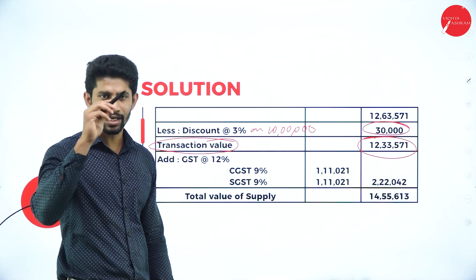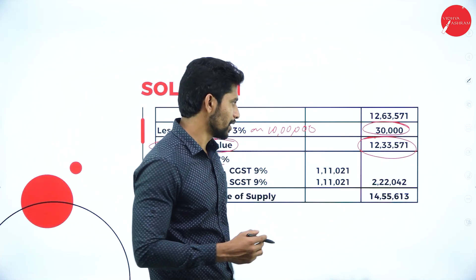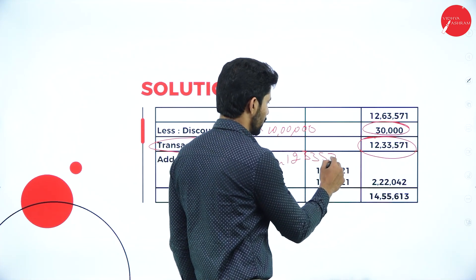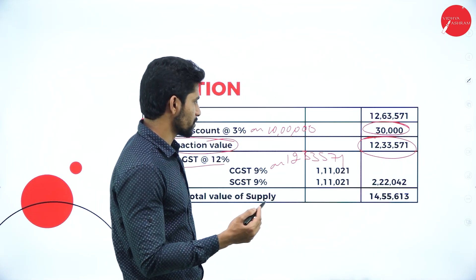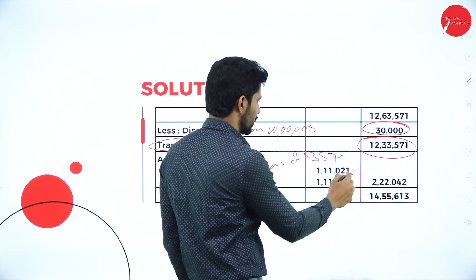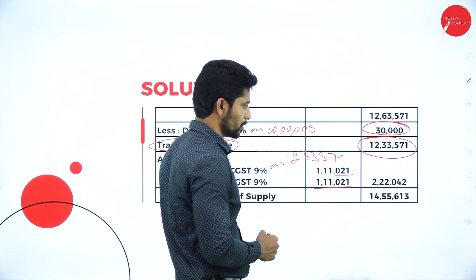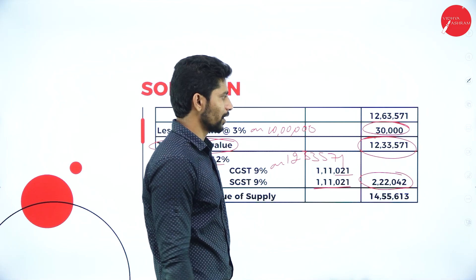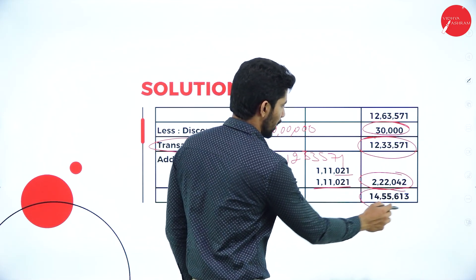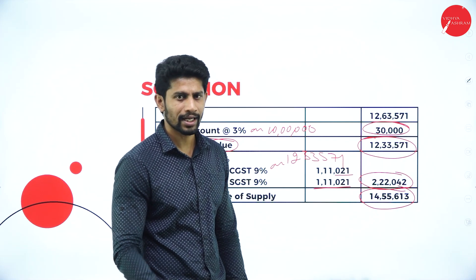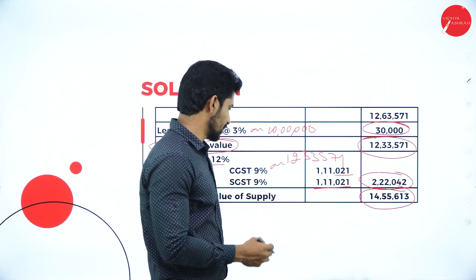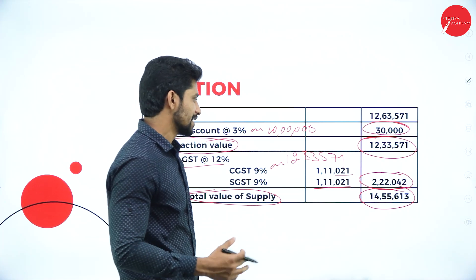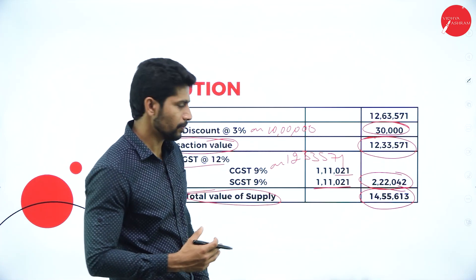On the transaction value of Rs. 12,33,571, compute CGST 9% and SGST 9%. CGST 9% = Rs. 1,11,021 and SGST 9% = Rs. 1,11,021, giving total GST of Rs. 2,22,042. Adding Rs. 2,22,042 to Rs. 12,33,571 gives Rs. 14,55,613, which is called the total value of supply. This is how we solve the problem.